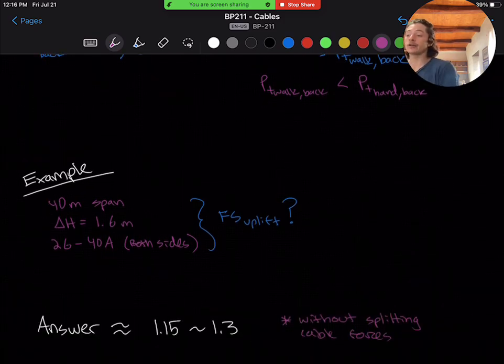Now, depending on your fill and ramp wall calculation method, your answer should have been somewhere between 1.15 and 1.3, without splitting the cable forces.